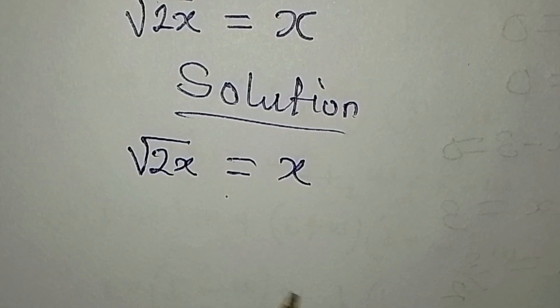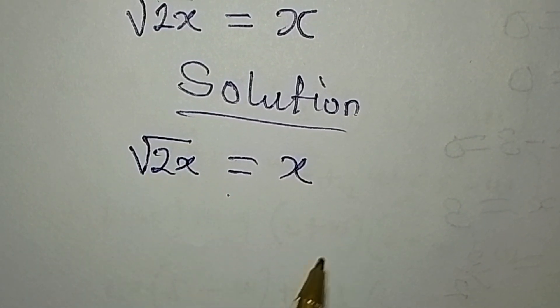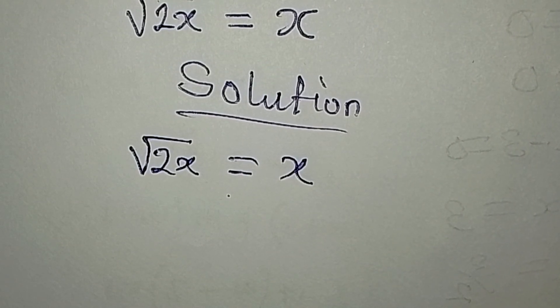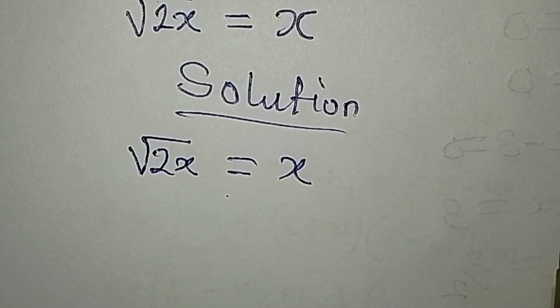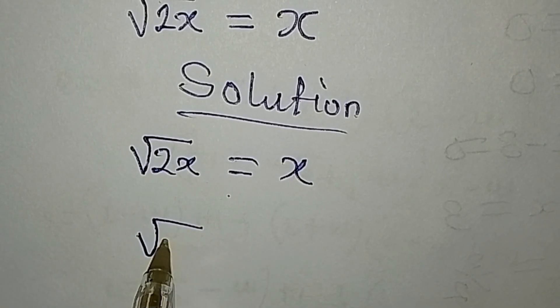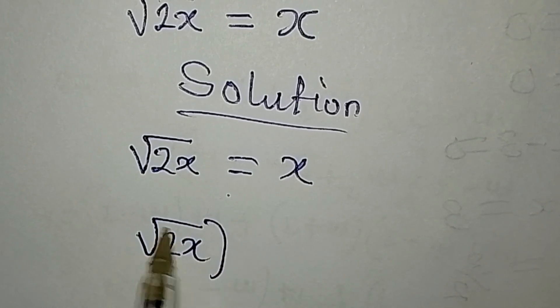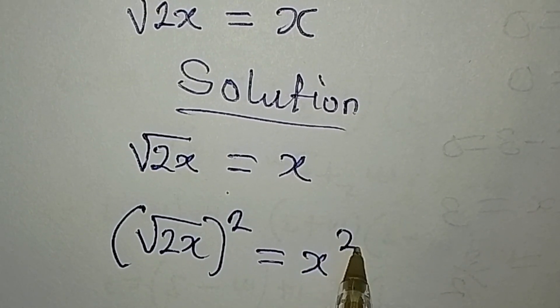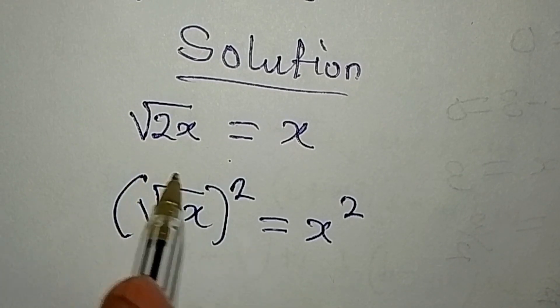Now looking at this problem, you will think it is difficult, but it is not difficult. To deal with this problem, what will be the first step? The first step is to square both sides. So I will square square root of 2x to the power of 2, and that is equal to x to the power of 2.